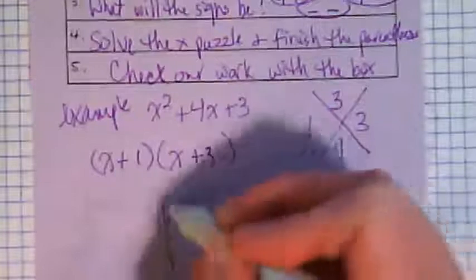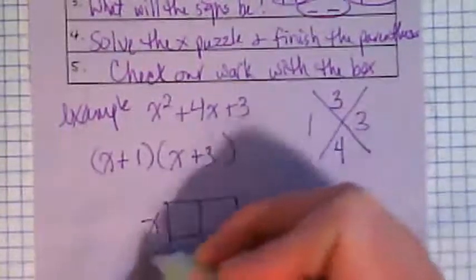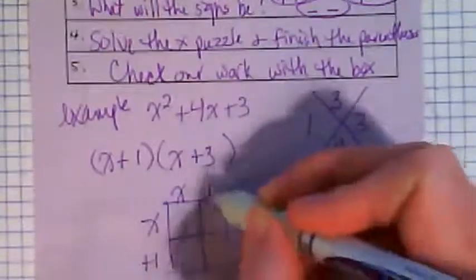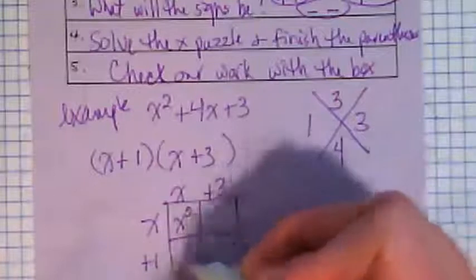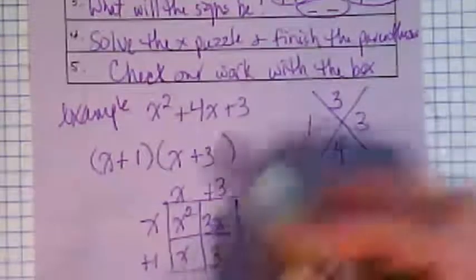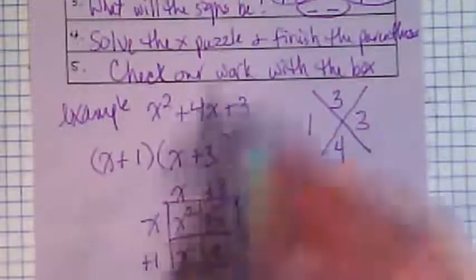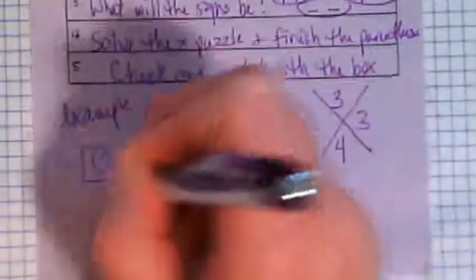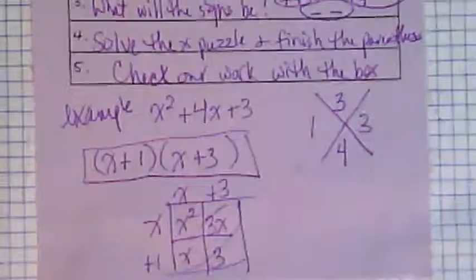And let's check with a box. X plus one, X plus three. X squared, X, three X, and three. Add those together, I get four X. So that checks. That means this is our factored form of this quadratic trinomial.